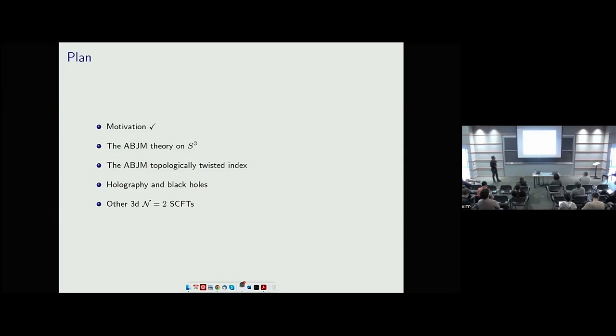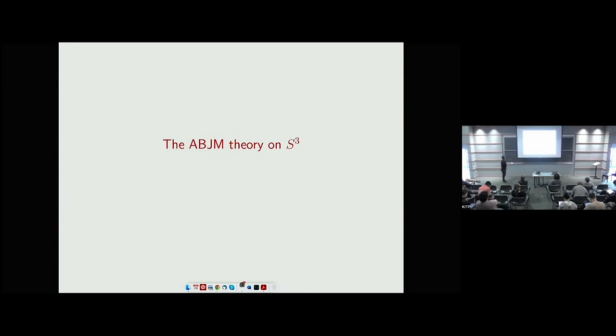That other partition function is some kind of an index — a simpler index than the one discussed earlier. Then I will make some comments about holography and black holes, and then I'll explain that all of this is not only a feature of ABJM but is broadly valid for all examples I know of such CFTs with explicit bulk duals.